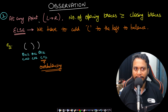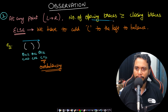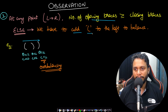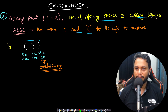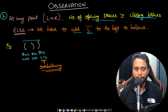Now let's look at some observations to build our solution. In the first observation, at any point while passing from left to right one bracket at a time, the number of opening brackets must always be greater than or equal to the number of closing brackets. This must be true for valid bracketization — otherwise we need to add additional opening brackets.